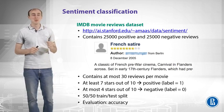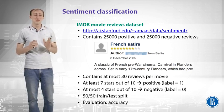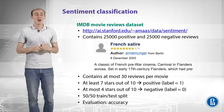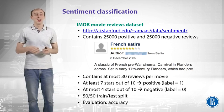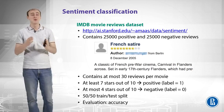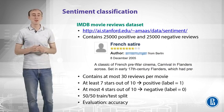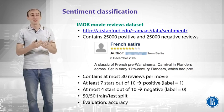We can take the IMDB movie reviews dataset, which you can download — it is freely available. It contains 25,000 positive and 25,000 negative reviews. You can look at the IMDB website and see that people write reviews there and also provide a number of stars from 1 to 10. They rate the movie and write the review, and you can use all those reviews as a dataset for text classification.